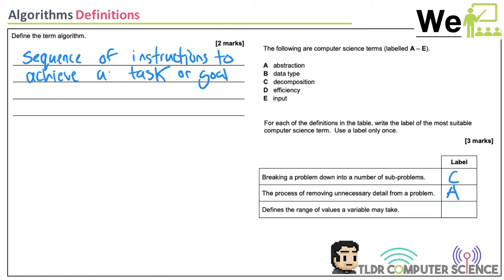Defines the range of values a variable may take — what could restrict the type of values? Data type. If it's an integer, could you store letters in there? No. And you couldn't store floating point numbers either. So that would be data type. The answers are C, A, B.